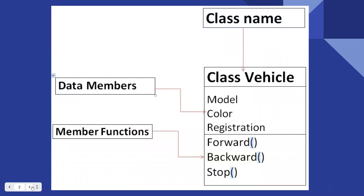Generally a class works like a prototype, which means that any real-time entity you can model inside programming. Here we are creating a prototype for a vehicle. The vehicle will have data members and member functions. The class name looks like a noun representing some entity. Data members are the attributes of the prototype — for example, every vehicle will have model number, color, and registration. Member functions or methods represent the behavior — for example, a vehicle can go forward, backward, or stop.